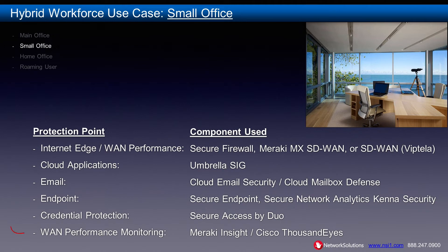WAN performance is especially important for the small office, and is more controllable than in a home office or for a roaming user, because small offices have business-class synchronous WAN bandwidth as opposed to consumer-class broadband. If you have Meraki MX at the internet or WAN edge, Meraki Insights can be leveraged for WAN performance monitoring and troubleshooting. In any case, ThousandEyes can be used for deep performance inspection, including internet bottlenecks.